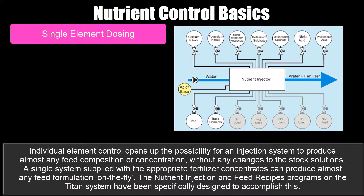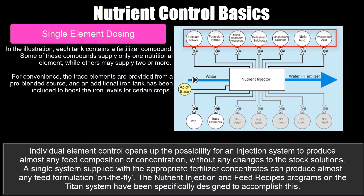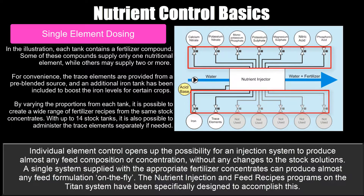Single element dosing opens up the possibility for an injection system to produce almost any feed composition or concentration without any changes to the stock solutions. A single system supplied with the appropriate fertilizer concentrates can produce almost any feed formulation on the fly. The nutrient injection and feed recipe programs on the Titan system have been specifically designed to accomplish this. Each tank contains a fertilizer compound — some supply only one nutritional element, while others may supply two or more. For convenience, trace elements are provided from a pre-blended source, and an additional iron tank can be included to boost iron levels for certain crops. By varying the proportions from each tank, it's possible to create a wide range of fertilizer recipes from the same stock concentrates.